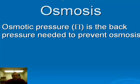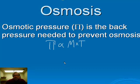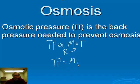Osmotic pressure, given by capital Pi, is the back pressure needed to prevent osmosis from occurring, or equivalently, the pressure you'd have to provide to push back on the osmotic action and restore the system to where it was before osmosis began. Osmotic pressure is directly proportional to the product of temperature and molar concentration: Pi is proportional to molarity times temperature. The constant of proportionality turns out to be the universal gas constant R, giving us Pi equals M times R times T.